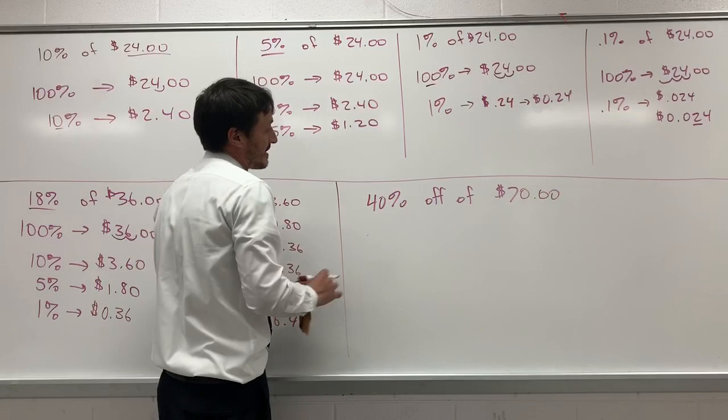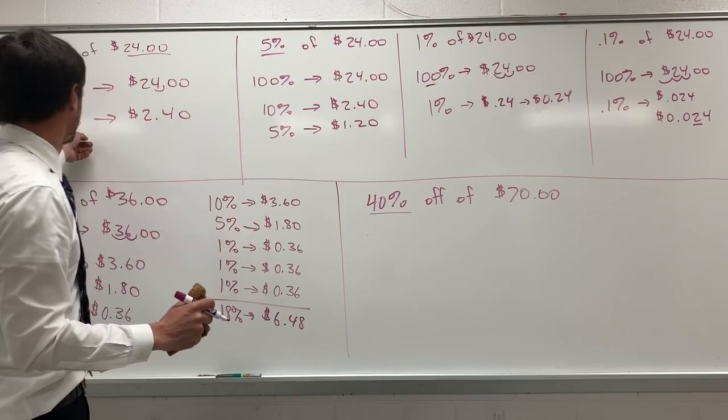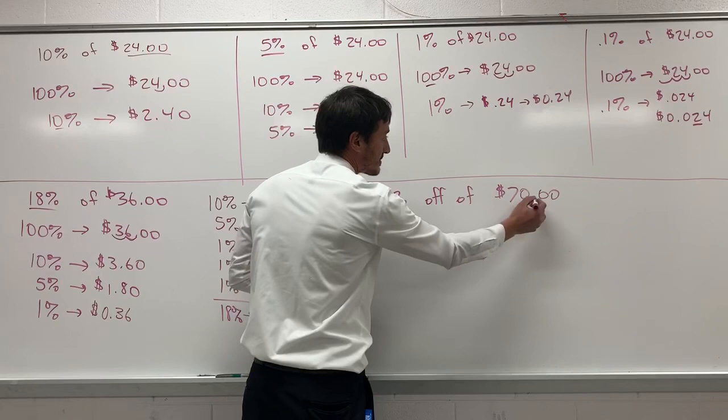So, in this case, what's the building block of 40% would be for 10%. So, you have to calculate a 10% first. The 10% of $70, one decimal movement, is going to be $7.